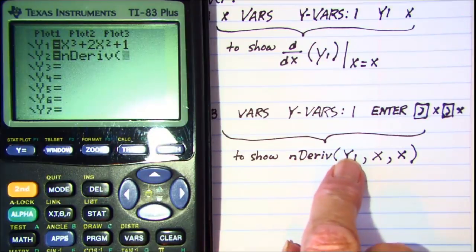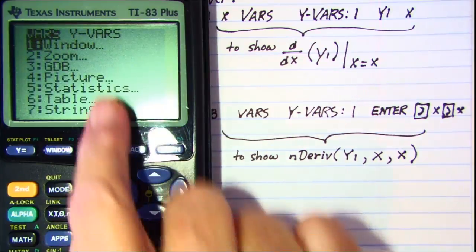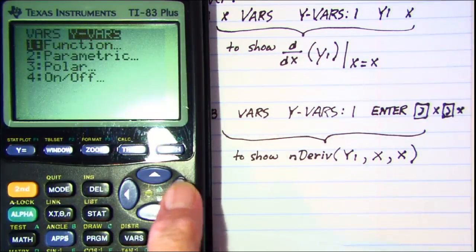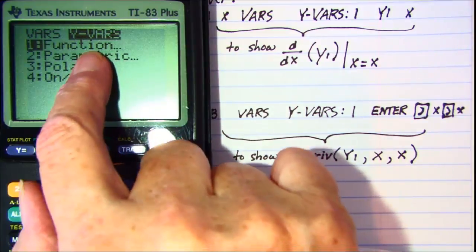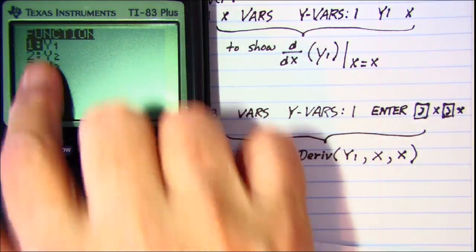Now we need a y1. So remember to get the y1, we need the VARS button, the variables. And then we need to go over to y variables. And then we need to choose our function option. And then we need to choose y1.